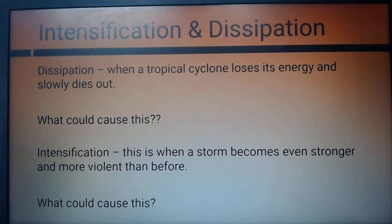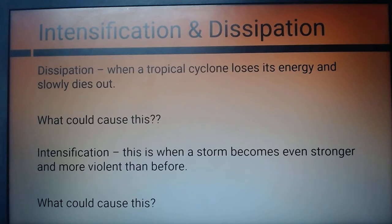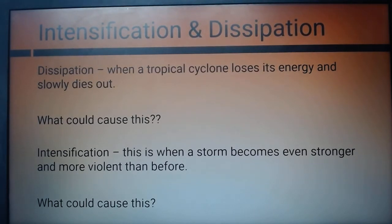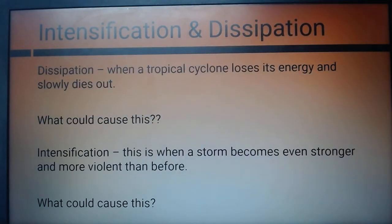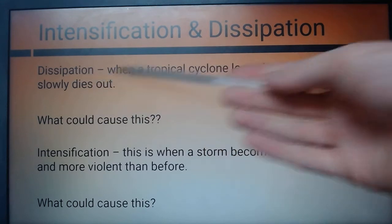Can hurricanes form over land? No, they can't. So a second point, number two: as hurricanes move over land, they lose all their energy as well. And number three: the shear winds — if the winds are too strong, it blows the storm apart, and if they're not strong enough, the thunderstorms won't get together.